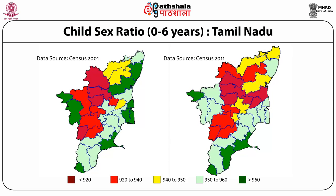Looking at Tamil Nadu, one of the biggest states of South India: until 1981 the ratios were good, but in 1991 there were some declines. By 2001, from Dharmapuri all the way down to Theni, ratios started declining. In 2011 some improvements were seen in Salem in parts of Tamil Nadu, but there was an incredible shift towards the eastern parts. Ratios which were not affected in the 80s, 90s, or 2000s have dropped in 2011.